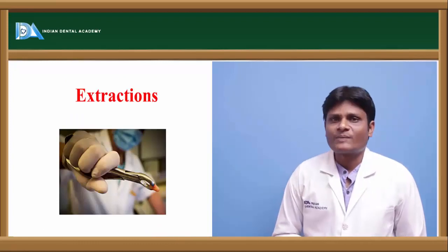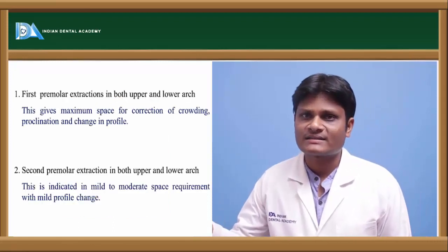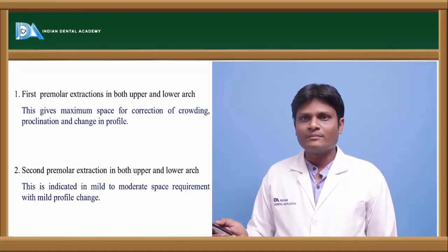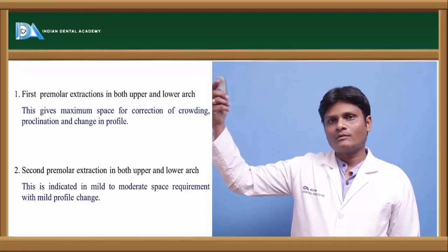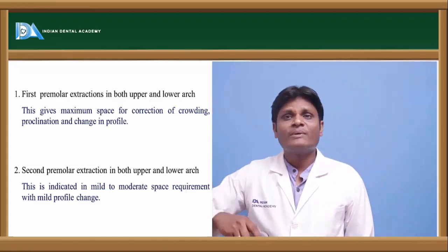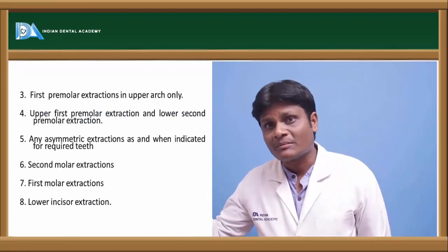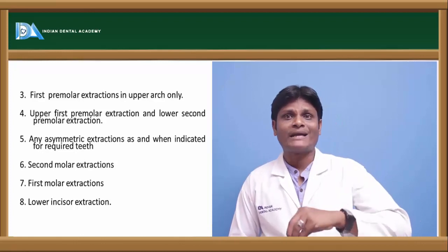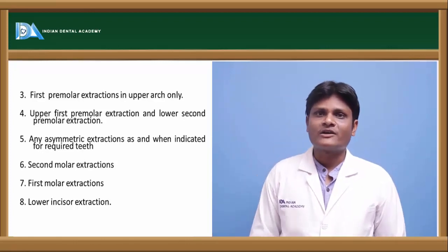The most commonly used method of obtaining space in orthodontics is extractions. Usually, first premolars are extracted in cases of severe crowding and severe proclination of anteriors. In cases of minimal crowding and only mild proclination, second premolar extraction can be considered. Combinations such as upper first and lower second premolar, upper second and lower first premolar, or upper and lower first premolars may be chosen depending on the clinical situation. Sometimes extraction of second molars or a single mandibular incisor may be indicated.